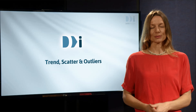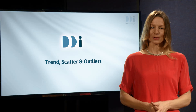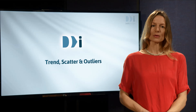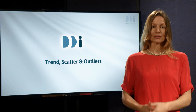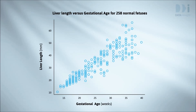We had a quick look at making predictions using a scatter plot in the last video, but now we're going to go more deeply into some of the issues involved. When should a doctor start worrying that a liver length is abnormal for a fetus of a given age? These are the gestational ages and liver lengths of 258 normal human fetuses, unborn babies, determined by ultrasound. Our outcome variable is the liver length and the predictor variable is the gestational age of the fetus, which is an estimate of the time since conception.